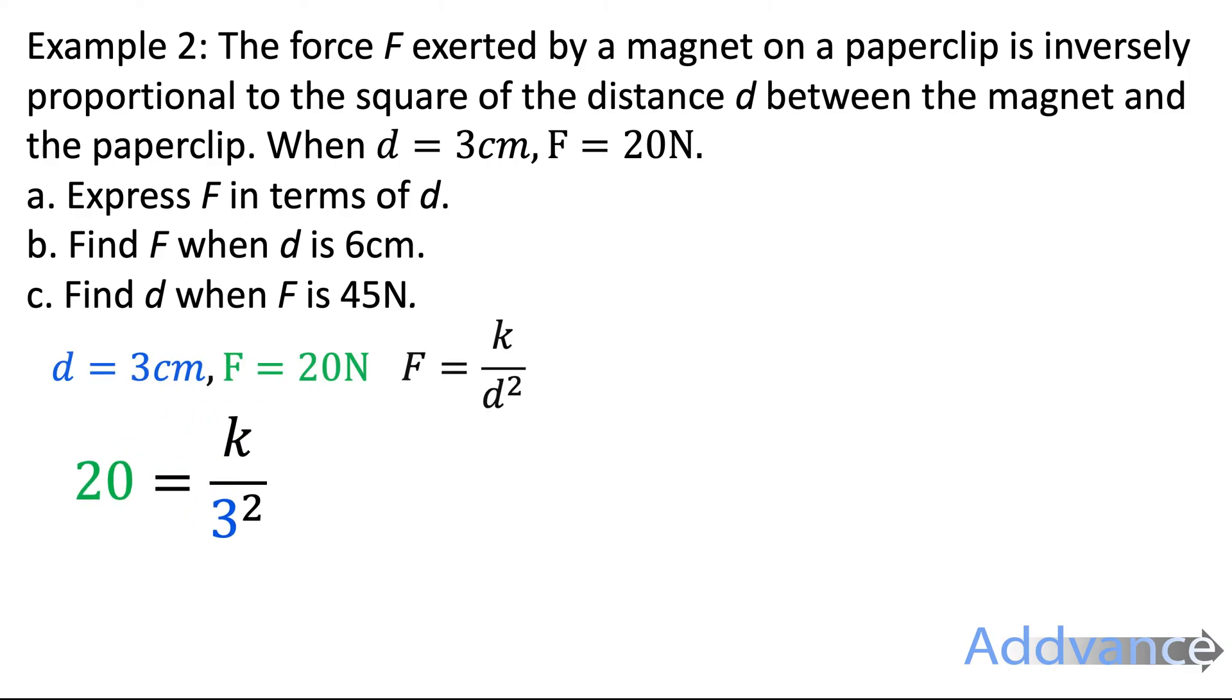We use our numbers. So the force is 20, the distance is 3. And then we rearrange. We multiply up by 3 squared. 20 times 3 squared is 180. And so k is 180. And our equation is F equals 180 divided by d squared.